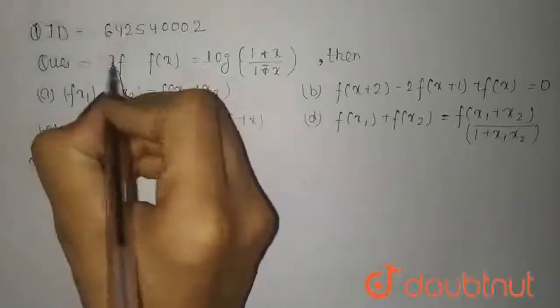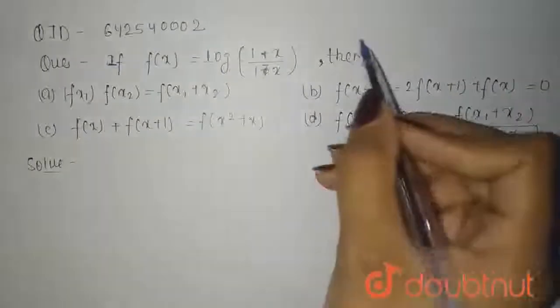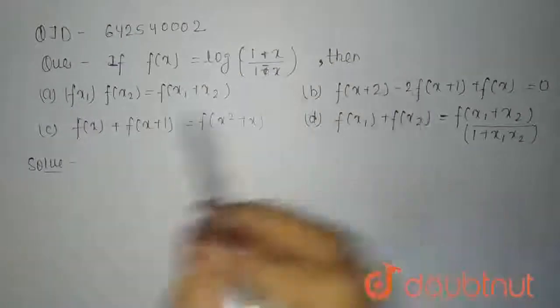Hello everyone! So, the question is, if f of x is equal to log of 1 plus x upon 1 minus x, then what is the correct option?